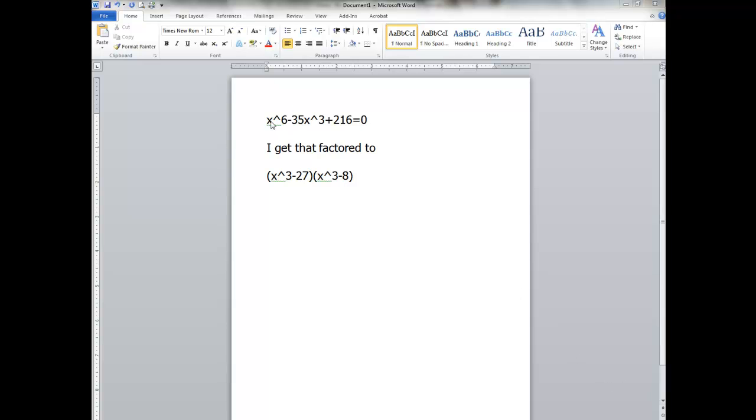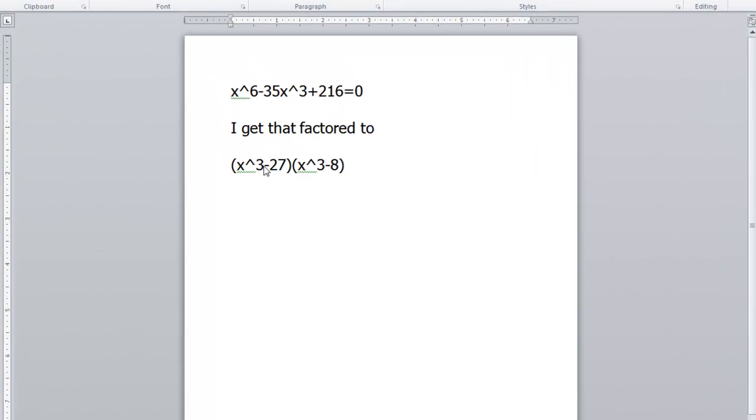So here's your original problem: x to the 6 minus 35x cubed plus 216 equals 0. And so you understand how we factor this.